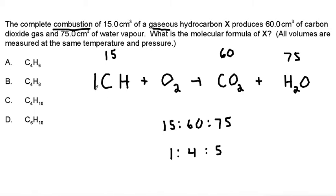That means we're going to have a 1 in front of the hydrocarbon, a 4 in front of the carbon dioxide, and a 5 in front of our water.